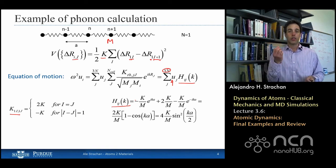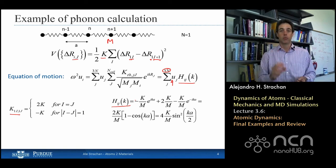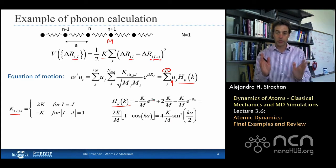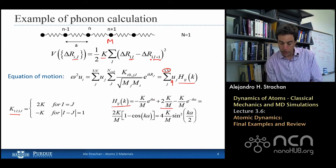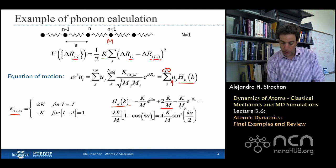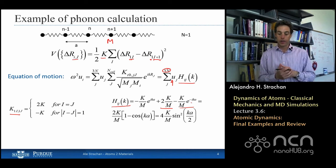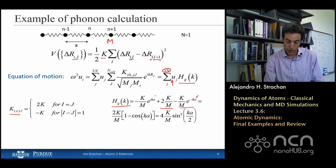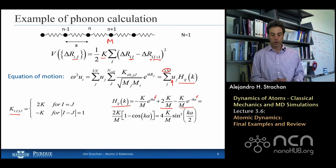Of course, the dynamical matrix, since it's a 1D system with a single atom per unit cell, has dimension, it's a one by one matrix, and the expression you can see here, there's three non-zero terms. The one in the middle is the self-interaction, the one side with itself, the one on the right is the interaction of one atom with the one that's at negative a, and the first term is the interaction of the atom with the one right next to it.